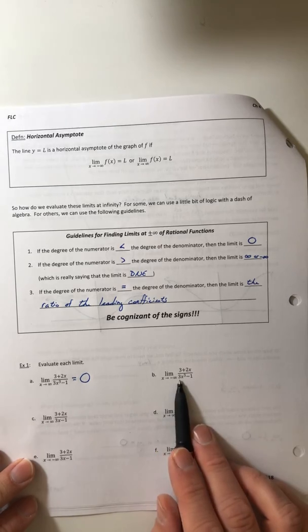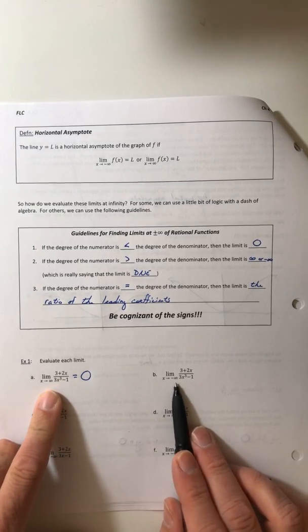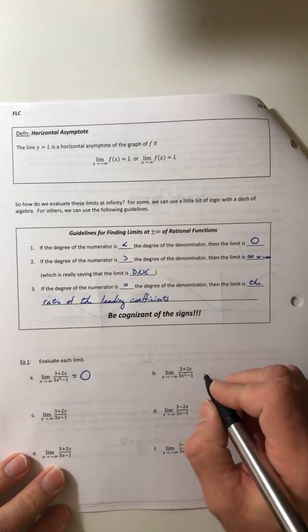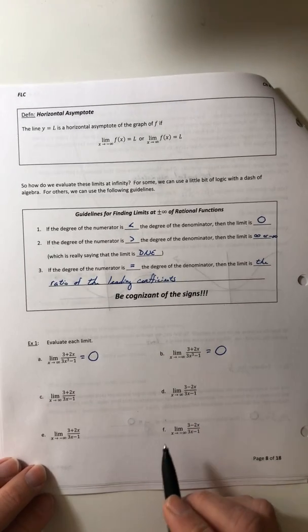So if you look at part b, it's the exact same function, but we switched what x was approaching. And that's not going to matter because the denominator is the bigger one. So it's going to go off to zero.